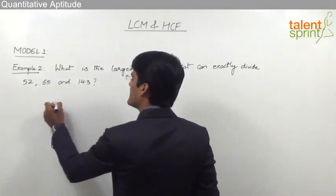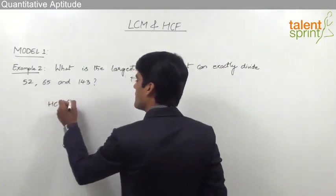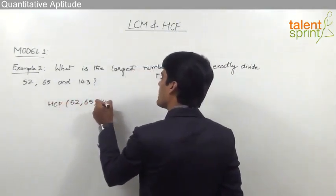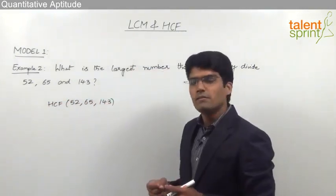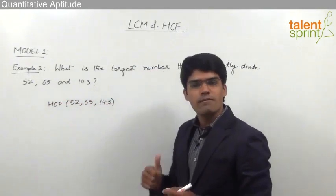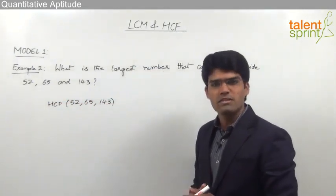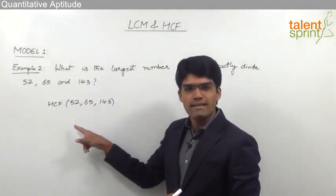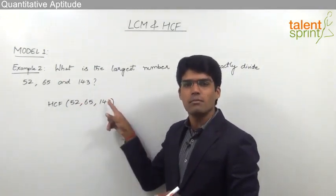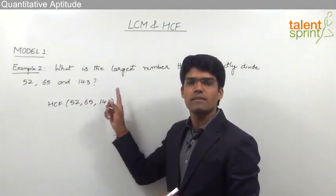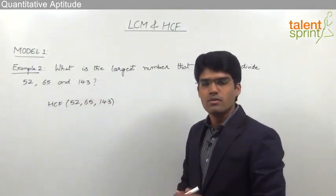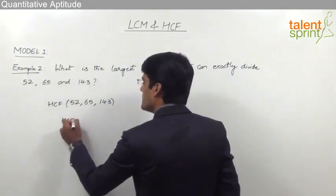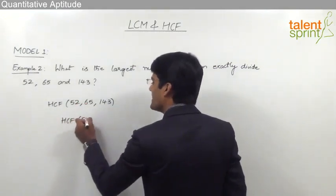So the answer here is the HCF of 52, 65 and 143. As we have learned, to find the HCF for three numbers we first find the HCF of two numbers, and then with that result and the remaining number, find the HCF again to get the HCF for all three. So let us first find the HCF of 52 and 65.